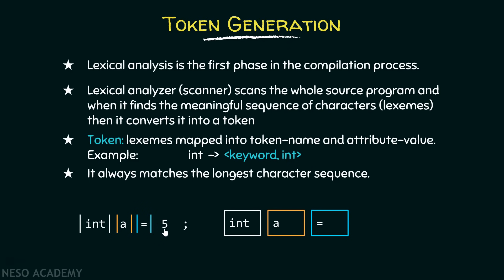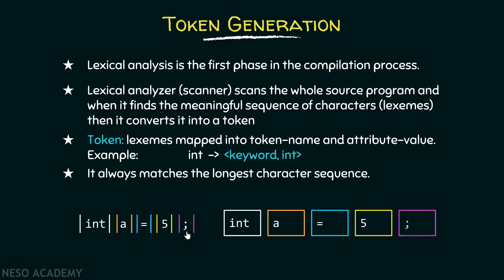After the blank space, the lexical analyzer finds a digit 5, and immediately after that a semicolon with no space. You might think it would generate a token for '5;' together, but '5' and semicolon together is not a meaningful sequence of characters and cannot be treated as a lexeme. Separately they are valid lexemes, so a separate token is generated for 5 and a separate token for the semicolon. This is the job of the lexical analyzer — to determine whether a sequence is meaningful or not. In total, there are five tokens in this statement.